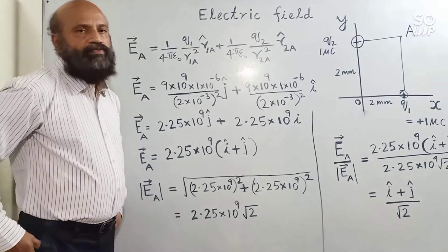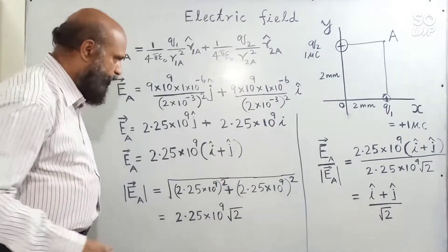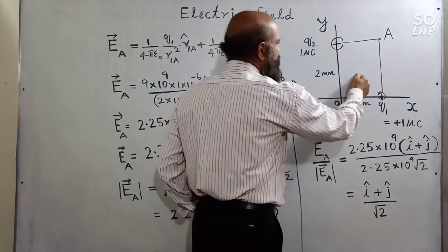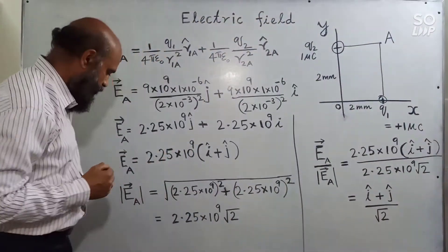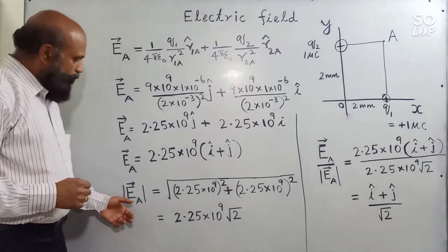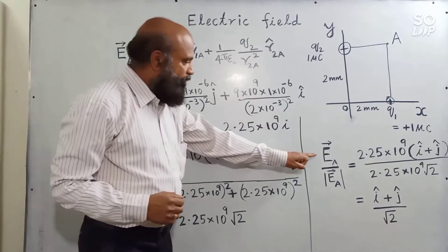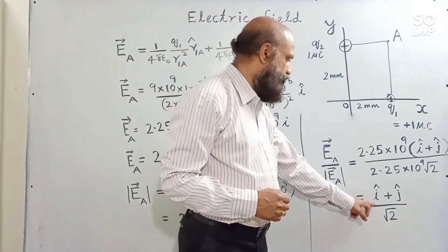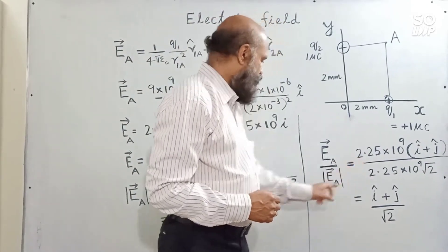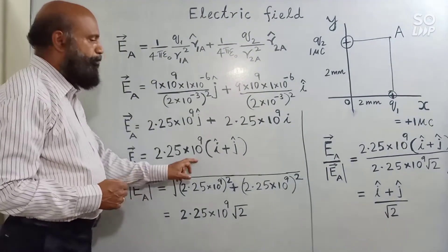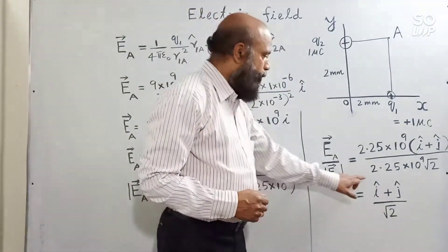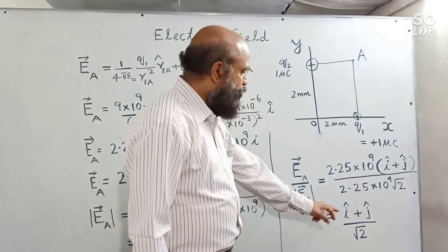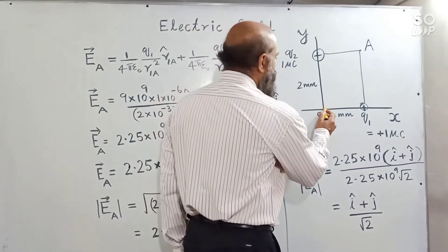You are already familiar with how to get the resultant of two vectors — this is one vector and this is another, so the resultant is given by the standard formula. If a vector is divided by its magnitude you get the unit vector. Here the vector (î + ĵ) is divided by its magnitude, giving a unit vector whose direction is along OA.